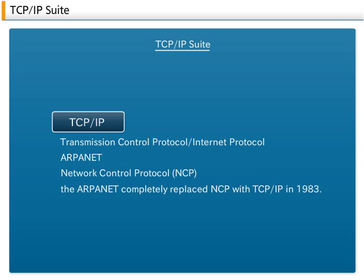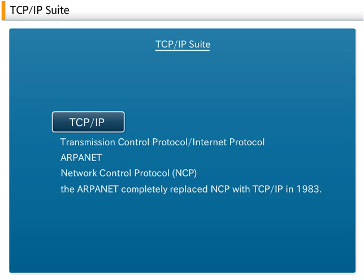TCP/IP — Transmission Control Protocol Internet Protocol — existed prior to the OSI Basic Reference Model. The first computer network, ARPANET, launched in the USA in 1969, was a packet switching network using the Network Control Protocol.